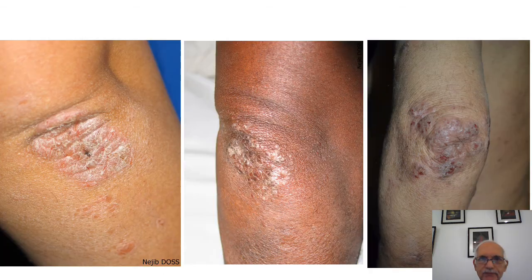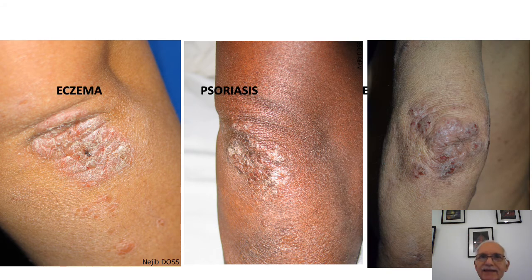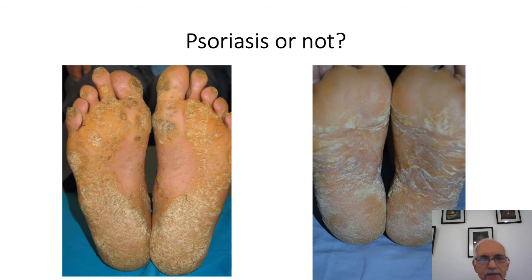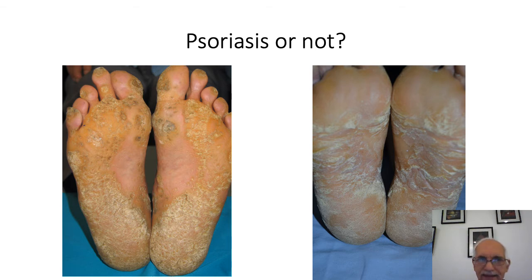Focusing on the elbows with a similar presentation, it was eczema and psoriasis. Here we have scaly lesions on the sole in two different patients — the lesions seemed similar but in fact it was palmoplantar keratoderma and psoriasis.